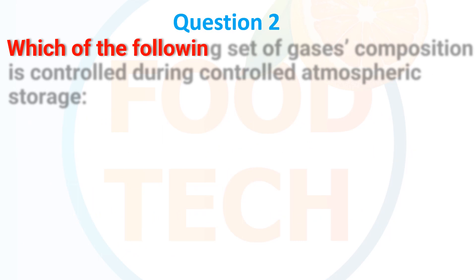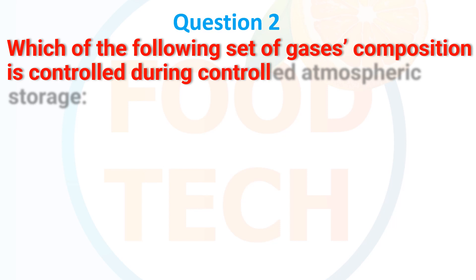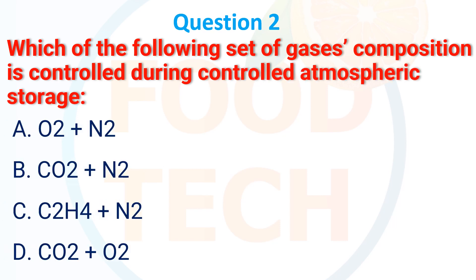Question 2: Which of the following set of gas composition is controlled during the controlled atmospheric storage? a. O2 plus NO2. b. CO2 plus NO2. c. C2H4 plus NO2. d. CO2 plus O2. The correct answer is CO2 plus NO2.